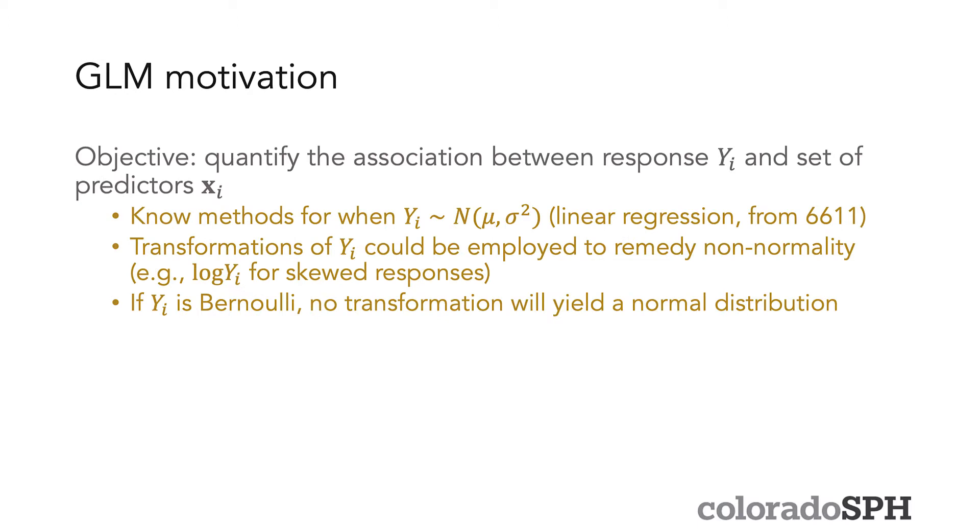I've talked a little bit about the GLM motivation in the previous two lectures but basically the objective here is to quantify the association between a response or outcome Y_i and a set of predictors X_i. And we already know methods for when Y_i has a normal distribution and these are coming from linear regression from 6611.